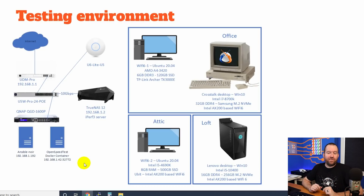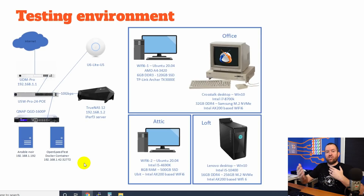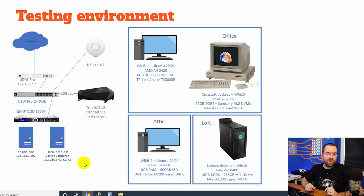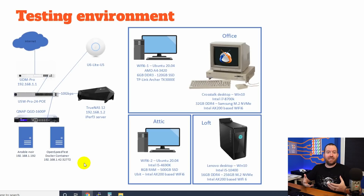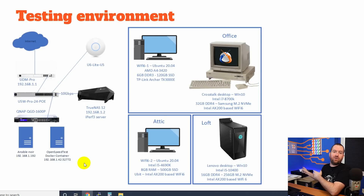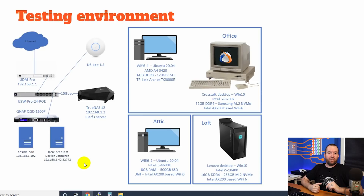For the second test, we used OpenSpeedTest running in a Docker container on my QNAP QGD-1600P and basically ran speed tests on the local network. For the final test, I used a combination of Windows Copy as well as Ansible for the Ubuntu clients to fire off a simultaneous download between all four Wi-Fi 6 connected clients against the NAS, where they were all downloading huge files simultaneously — basically maxing out the total sustained throughput we could get from these devices.